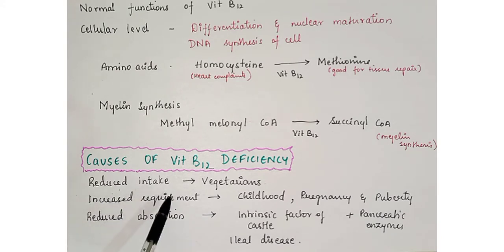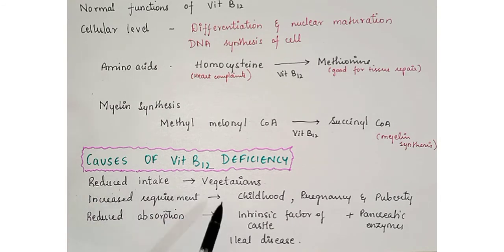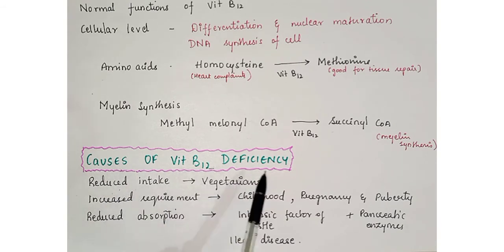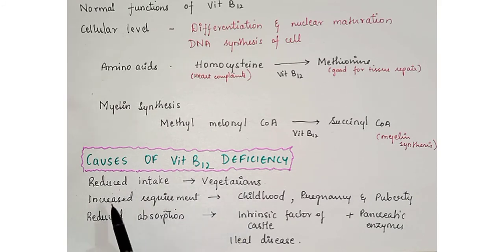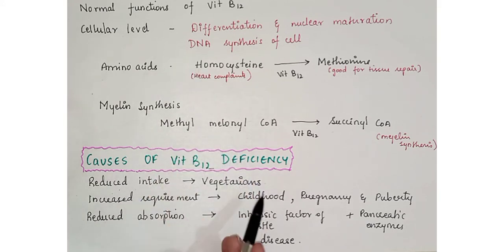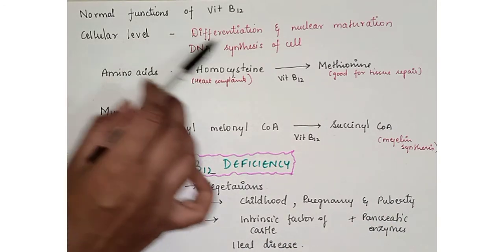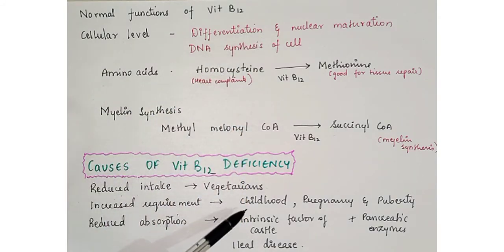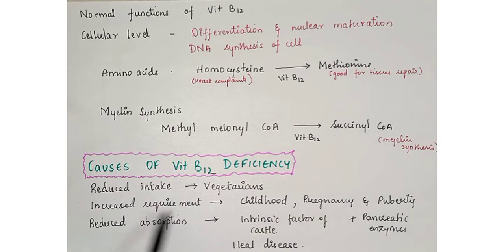The causes of Vitamin B12 deficiency include: first, reduced intake — since the main sources are meat, liver, and other animal proteins, vegetarians who avoid these are at risk. Second, increased requirement — during childhood, pregnancy, and puberty, more Vitamin B12 is needed for development and nuclear maturation, so deficiency is more likely in these states.